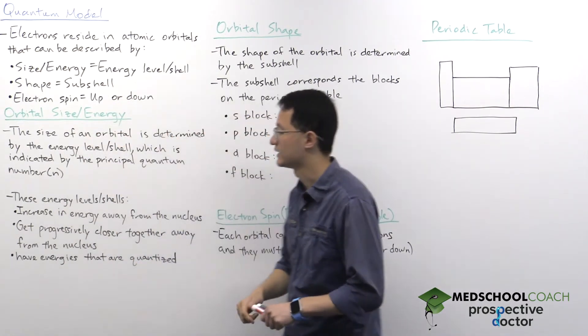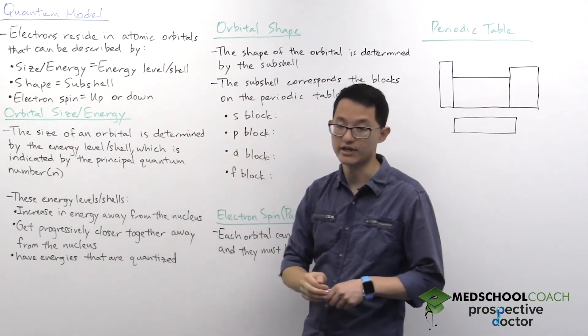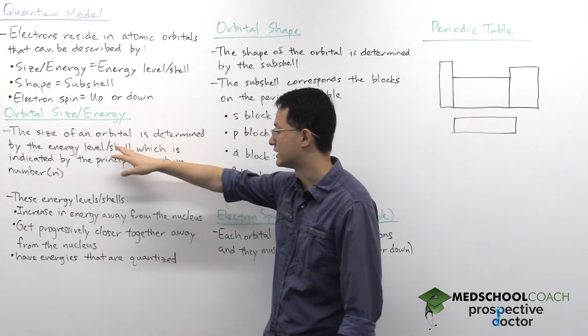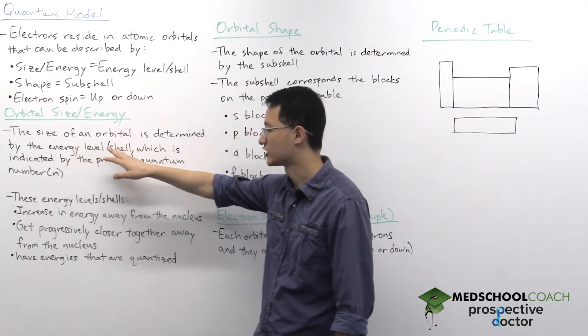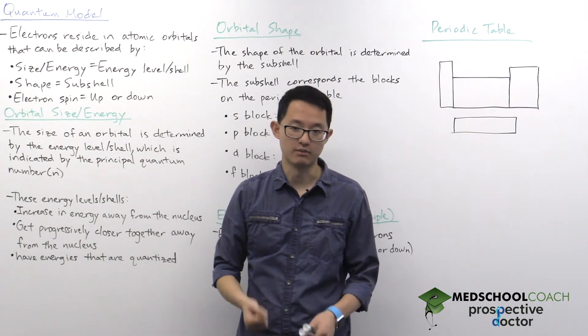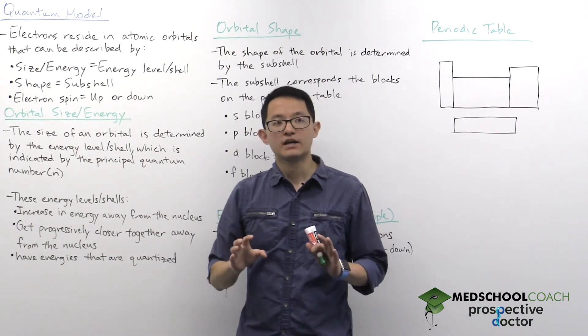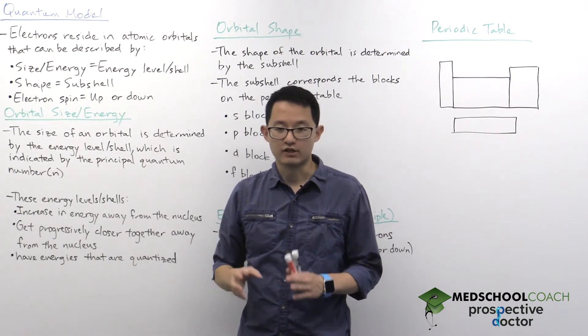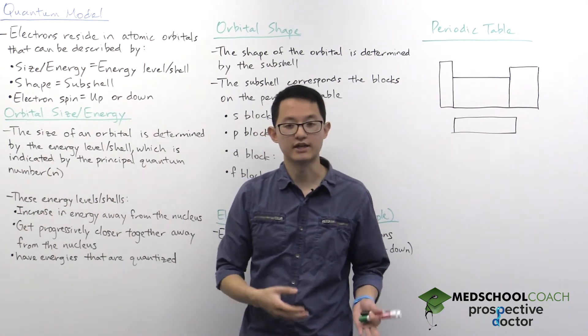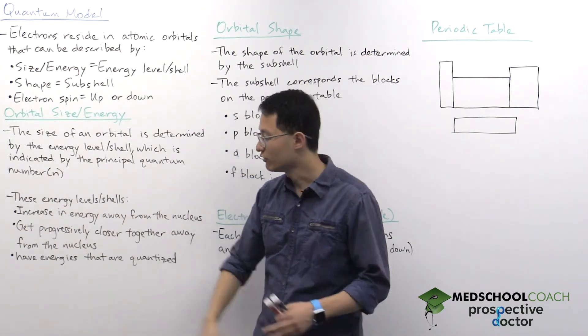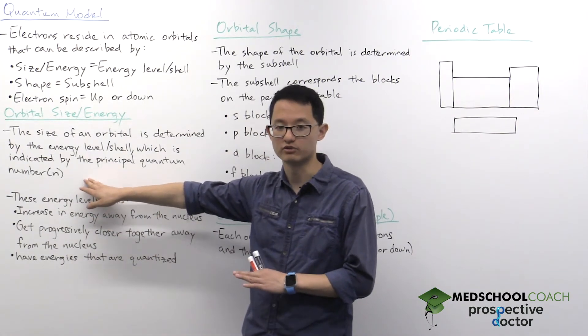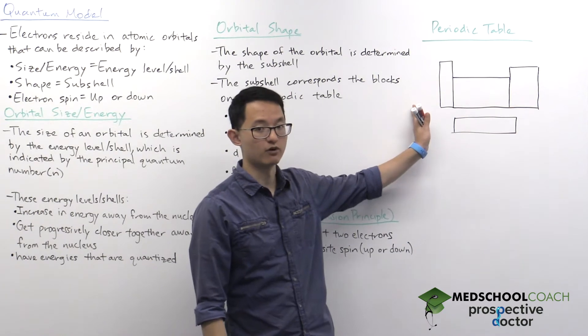To start, let's look at orbital size/energy. Similar to the Bohr model, the size of an orbital is determined by the energy level or shell, which is indicated by the principal quantum number. A lot of what we're going to discuss with the quantum model will be very much related to our next topic, which is electron configurations. We'll want to apply a lot of these topics about orbitals to the periodic table.